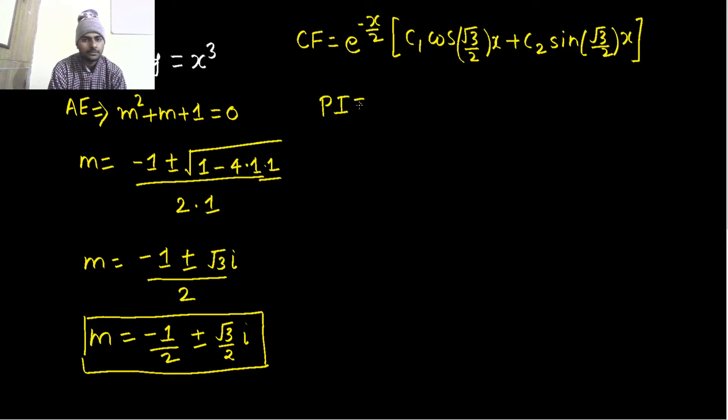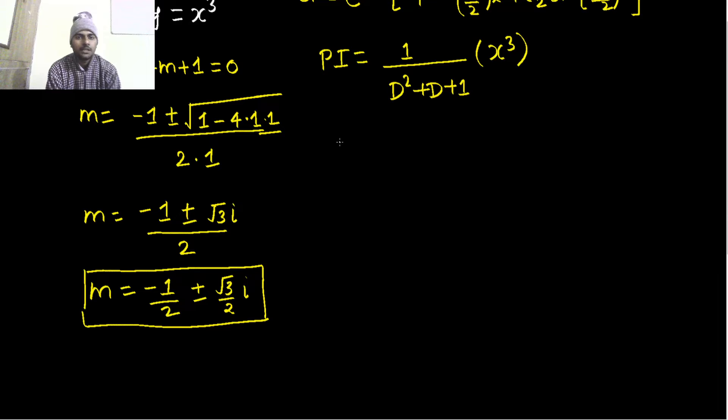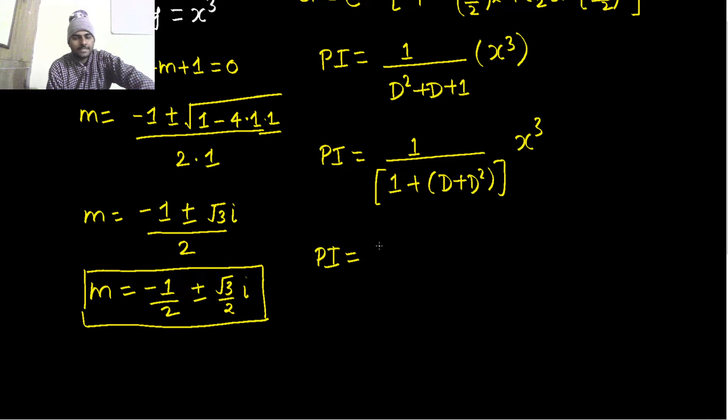Coming to particular integral, that is 1 upon f(D) which is D² + D, this will operate on x³. Whenever you have x^n type, to find particular integral we will try to write this function of D in terms of (1 + x)^(-n) type.